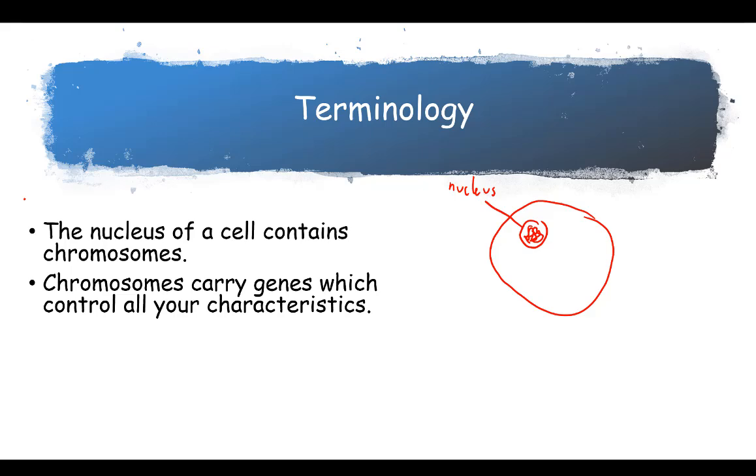Chromosomes carry genes which control all of your characteristics. So if we were to take out one of these chromosomes and look at it, we would see there's these little bands on it, and these little bands are the genes. So here's the nucleus, here's a chromosome, and on that there are genes.